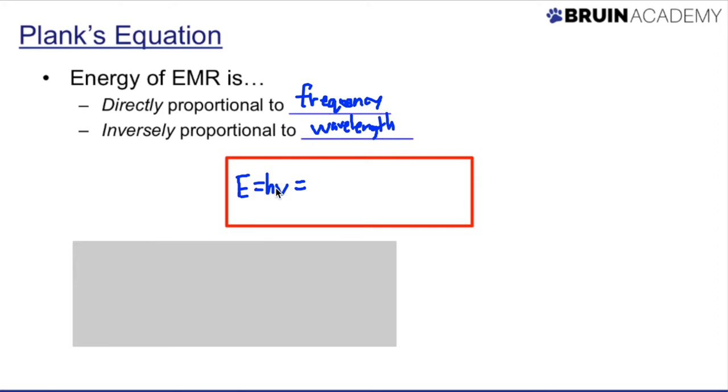And you can actually write this in a different form if you know that, based on the first equation, c equals lambda nu. Here, if you solve for frequency, if you solve for nu, you divide both sides by lambda. You get nu equals c over lambda, right? So instead of writing h nu, you can also write h c over lambda. And you'll often use either of these two forms, or sometimes even both of these forms.